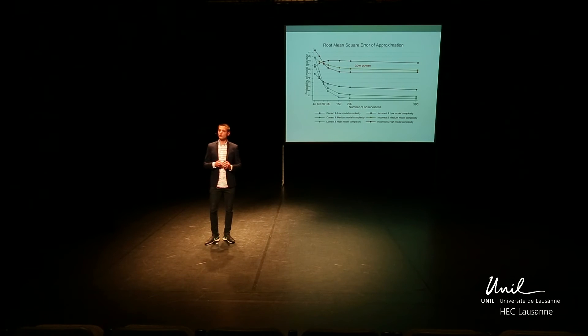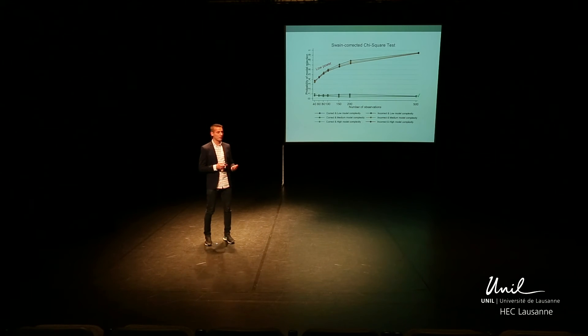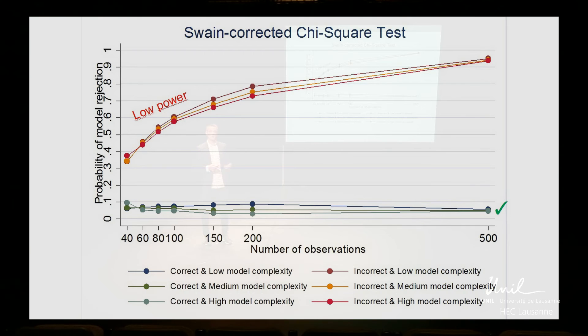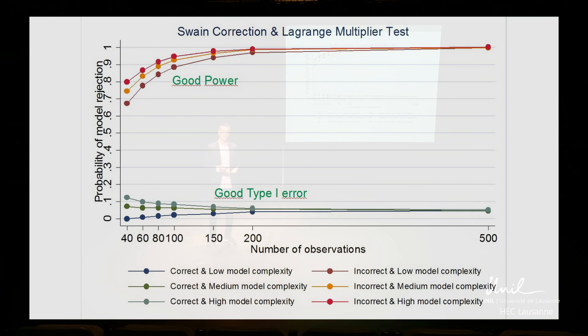Using the corrections to the chi-square test to detect a correct model works very well — the type 1 error is at 5% where it should be. However, the power to detect an incorrect model is somewhat too low at small sample sizes. To correct for this, we used another test in combination with the correction: a targeted Lagrange multiplier test. It tests whether a specific part of the model is correct — for example, the color of the car. Using the correction and the targeted Lagrange multiplier test, we are able to obtain good type 1 error as well as sufficient power, even at very small sample sizes.